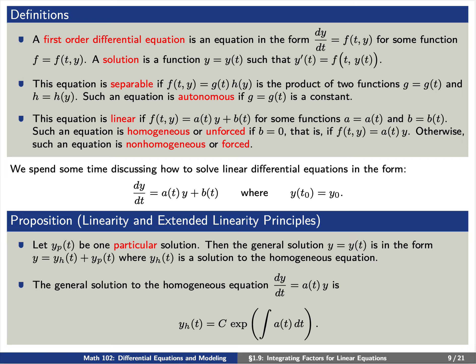Such an equation is said to be autonomous if g of t is a constant function. This equation is said to be a linear differential equation if the right-hand side f equals a of t times y plus b of t for some functions a of t and b of t. Such an equation is said to be homogeneous or unforced if b of t is identically zero — that is, f equals a of t times y.